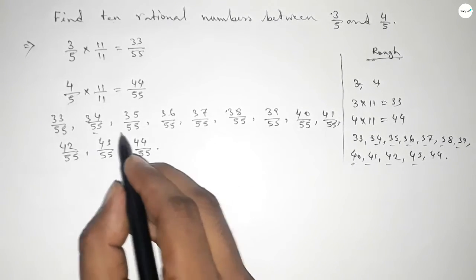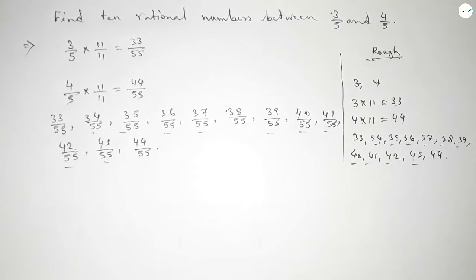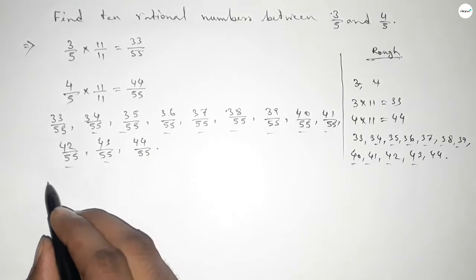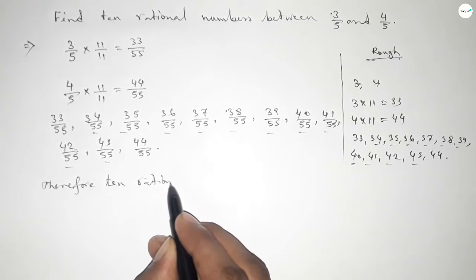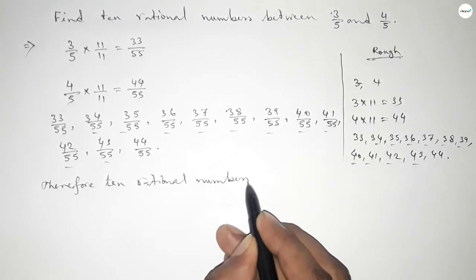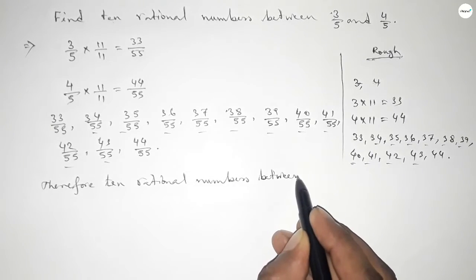And among these, these are the required 10 rational numbers between 3 over 5 and 4 over 5. Therefore 10 rational numbers between 3 over 5 and 4 over 5 are...